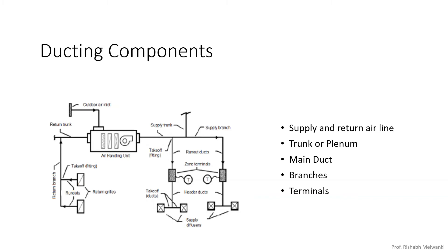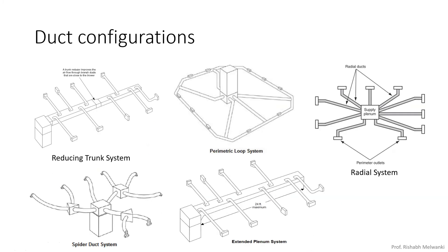As you studied AutoCAD — which is used for drafting — in the same way there will be different duct configurations. The first configuration is reducing trunk, where you can see the trunk is reduced. Then next one is perimeter loop system, radial system, spider duct system, and extended plenum system.